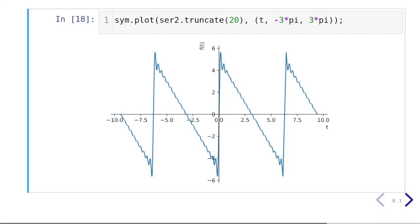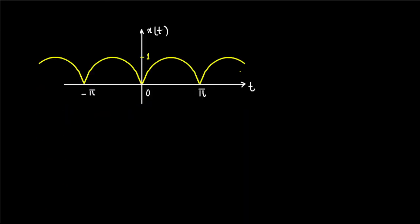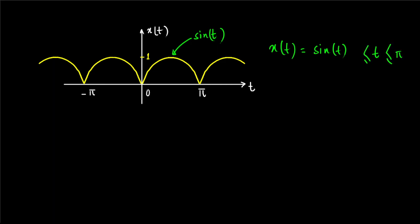Let's talk about one more signal: a rectified sine wave, essentially the absolute value of sine t. While sine t has a period of two pi, the absolute value of sine t has a period of pi because it repeats every pi seconds. Over one full period from 0 to pi, the signal is simply sine t, making it very easy to define for the Fourier series function.